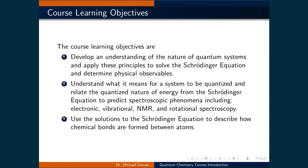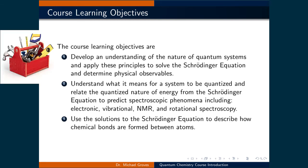The first is to develop an understanding of the nature of quantum systems and apply these principles to solve the Schrödinger equation and determine physical observables. This learning objective focuses on building our quantum mechanical toolbox. Because this course is directed towards upper division chemistry students, the application of this toolbox will be to make predictions of chemical systems. This is what inspires the other two learning objectives. So by the end of the course, we will understand what it means for a system to be quantized and relate the quantized nature of energy from the Schrödinger equation to predict spectroscopic phenomena, including electronic, vibrational, NMR, and rotational spectroscopy.